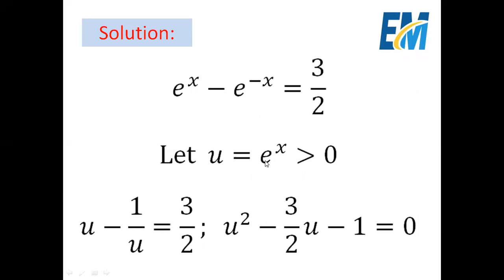Now let u = e^x. Note that e^x is positive for every x, so u is positive. Then e^(-x) = 1/e^x = 1/u. The equation becomes u minus 1/u = 3/2, which can be written as u² minus (3/2)u minus 1 = 0.